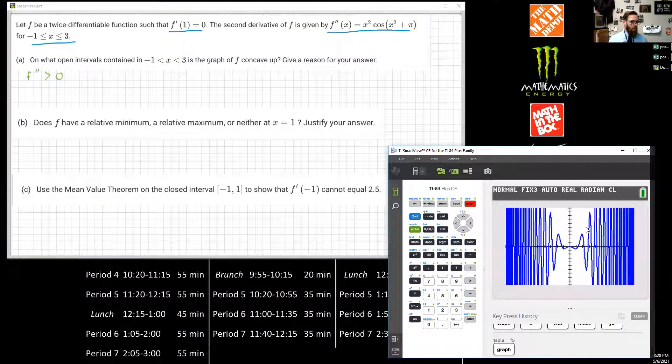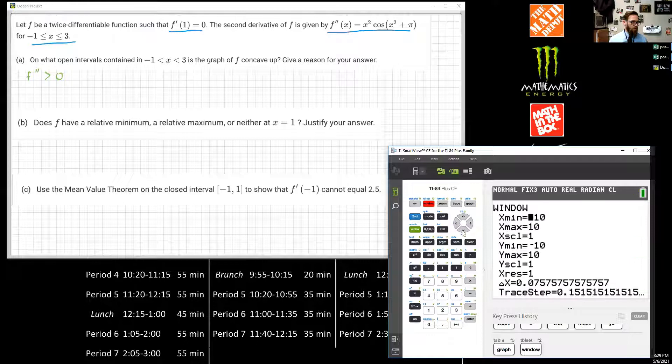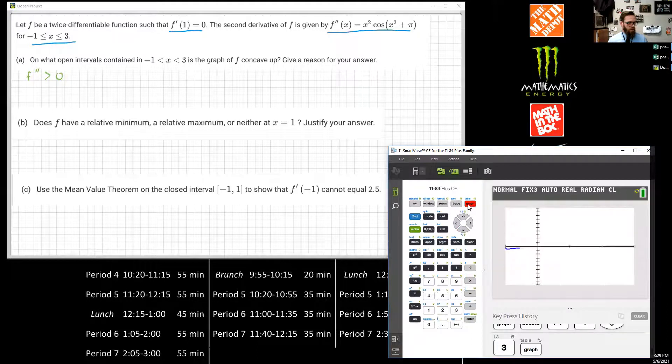So looking at the graph, we got this nasty-looking thing, but this is a standard window, -10 to 10, -10 to 10, and we only need to go from -1 to 3. So I'm going to change my window so that my X min is -1, and then my max is 3, and then take a look at my graph now.